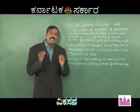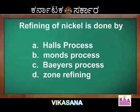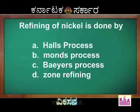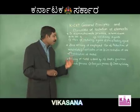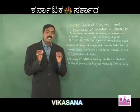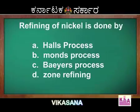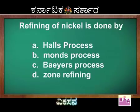Refining of nickel is done by — option A: Mons process; option C: Bayer's process; option D: zone refining. Refining of nickel is done by Mons process, option B, which is the right answer. Hall's process is the method of getting aluminium from alumina. Bayer's process is the method of concentration of aluminium ore. Zone refining is used to get ultra-pure metals.